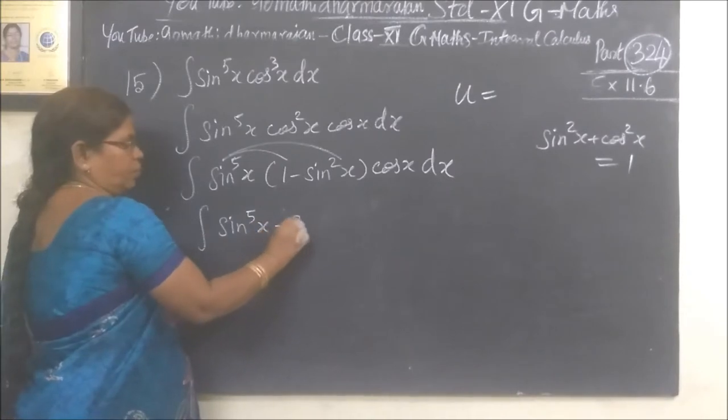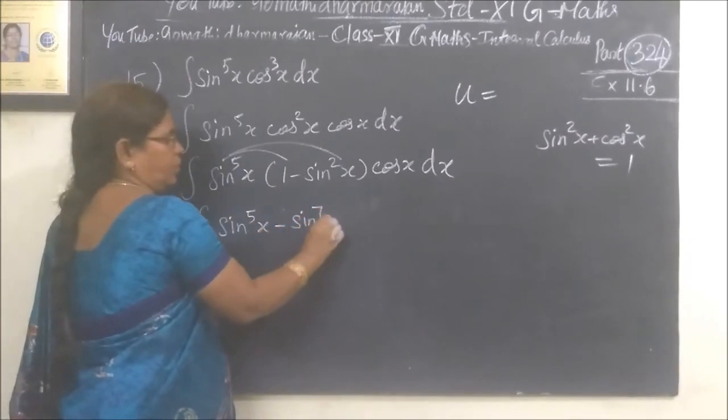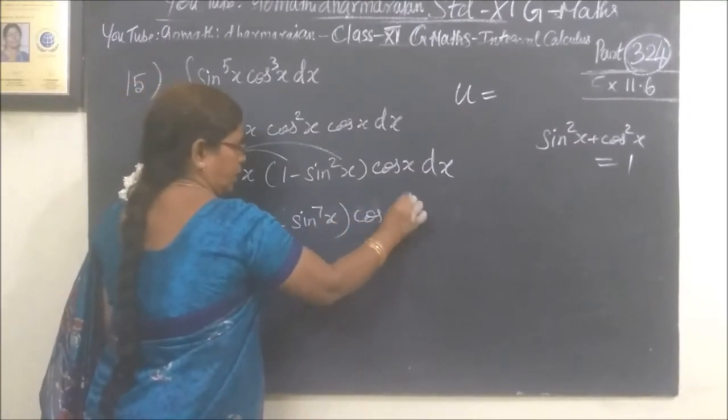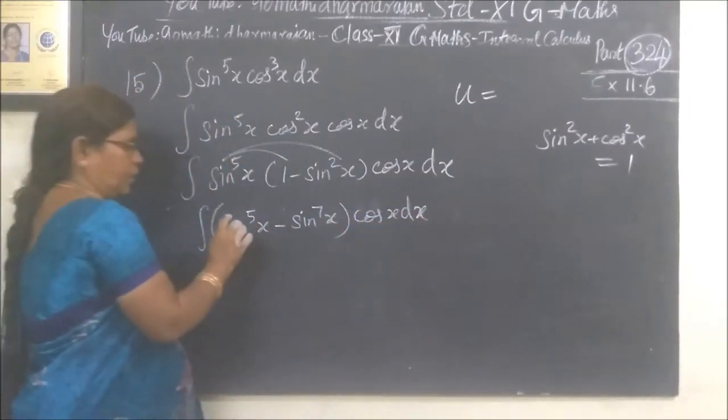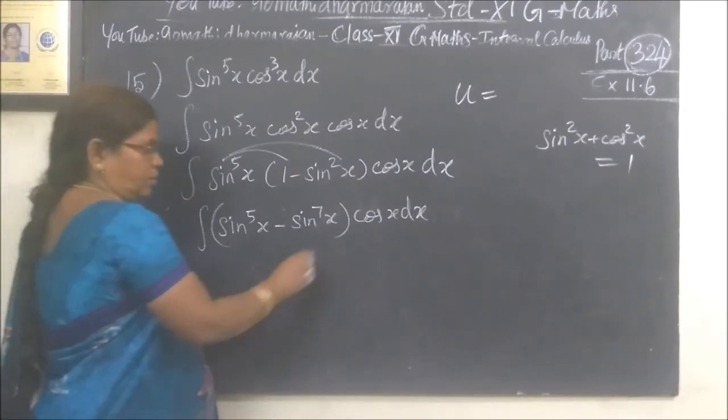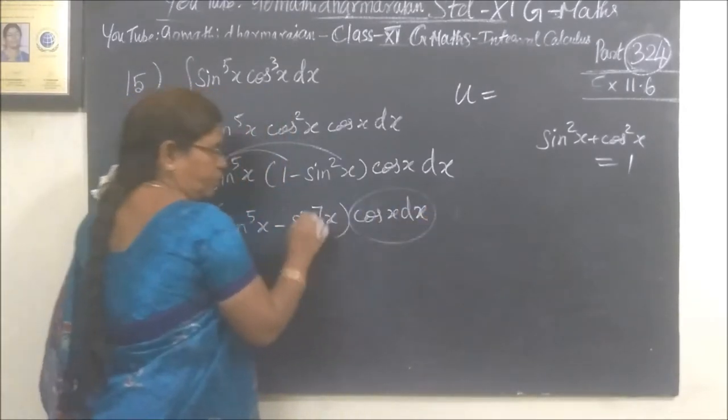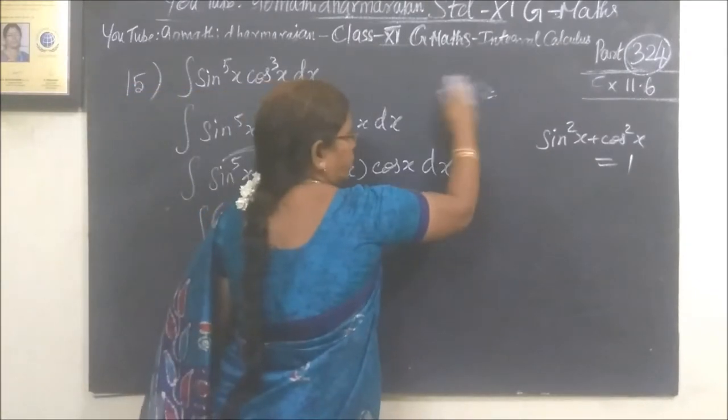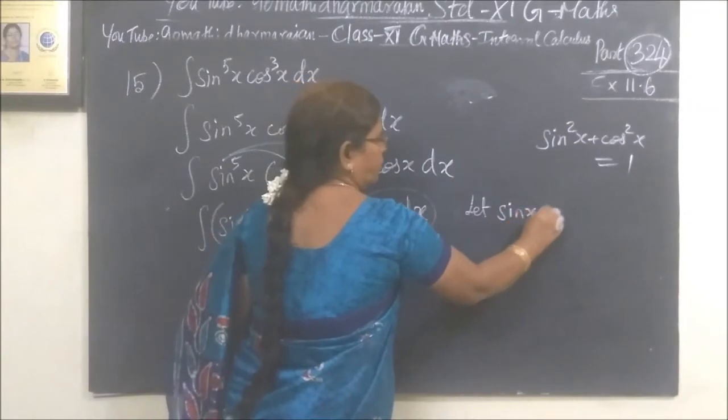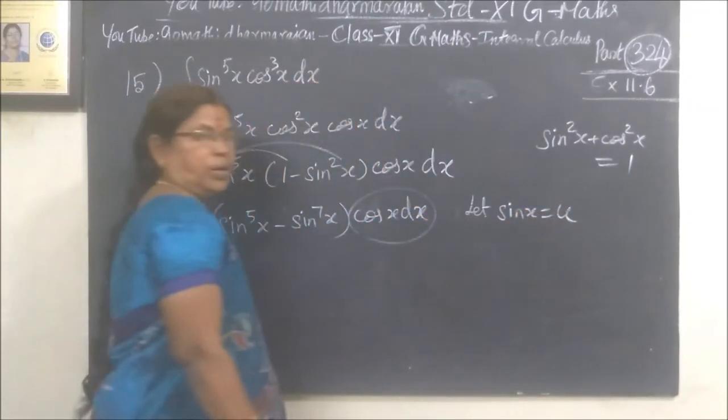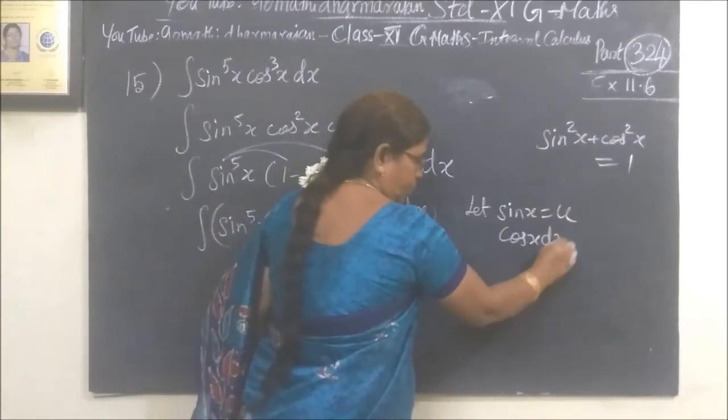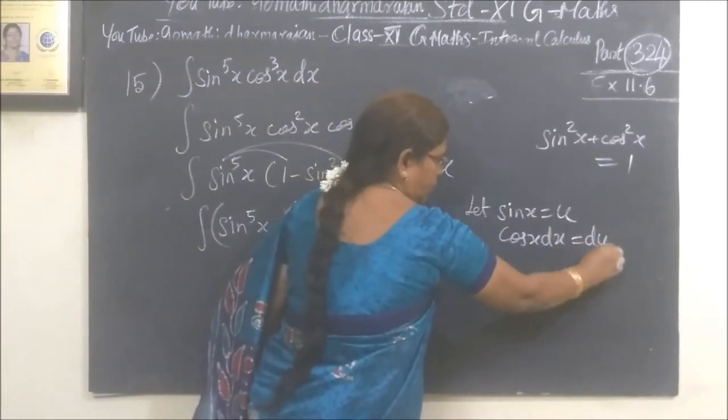Sin power 5 minus sin power 7. If you want to make this work, sin x is equal to u. Sin x is equal to u, then cos x dx is equal to du.